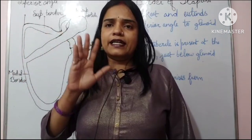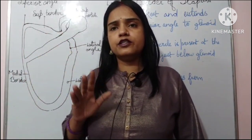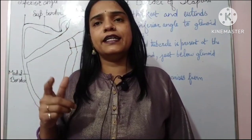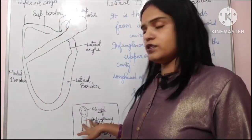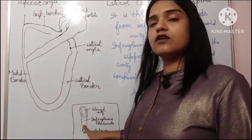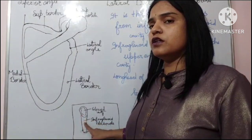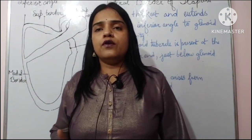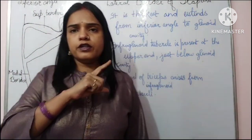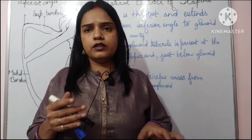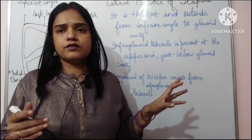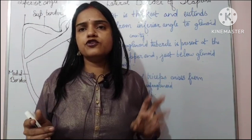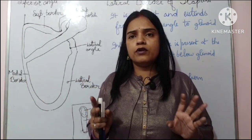The most important structure on the lateral border is the infraglenoid tubercle, located on the upper end of the lateral border, just below the glenoid cavity. Another important structure arising from the lateral border is the long head of triceps, which arises from the infraglenoid tubercle. This was all about the lateral border.